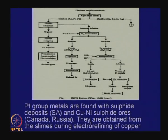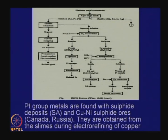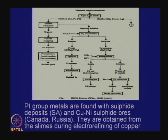Platinum group metals can be obtained from slimes during electro refining of copper. Let us see how it is done in countries where there is a lot more platinum in the platinum metal concentrates. You have to find a way of making concentrates, like we did in the case of gold before cyanide leaching. The leaching reagent is not cyanide, nor acid, nor alkali.